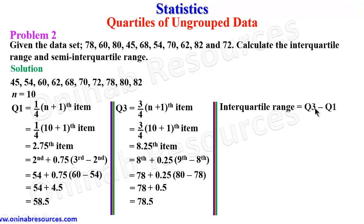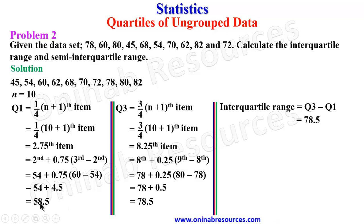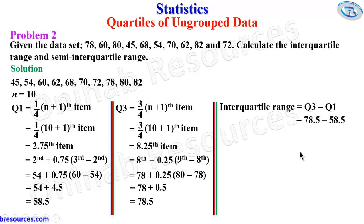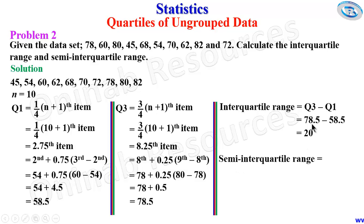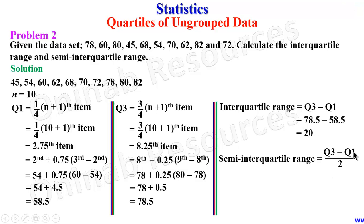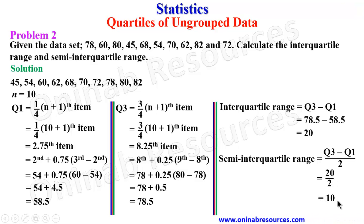We now calculate the interquartile range: Q3 − Q1 = 78.5 − 58.5 = 20. The semi-interquartile range is (Q3 − Q1) ÷ 2. We already calculated Q3 − Q1 = 20, so 20 ÷ 2 = 10.